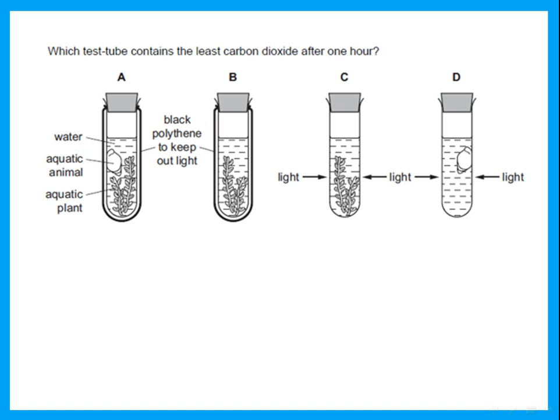Which test tube contains the least carbon dioxide after one hour? Least carbon dioxide means more photosynthesis — that is tube C. Tube A has animal and plant but no light, so they're all doing respiration, giving out carbon dioxide. Tube B has a plant but covered — no photosynthesis, only respiration. Tube C is the one taking carbon dioxide for photosynthesis. Tube D is just an aquatic animal, doing only respiration.